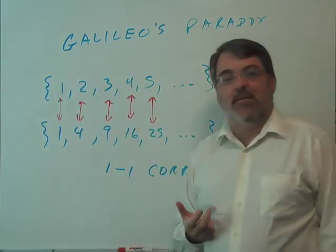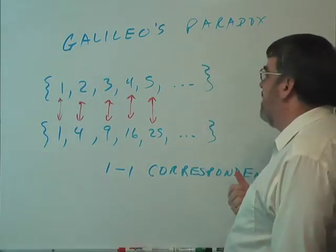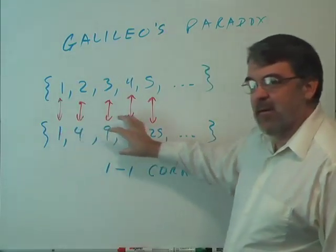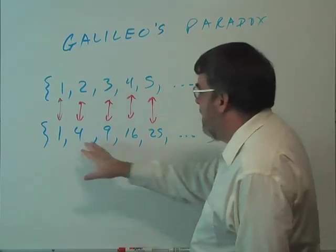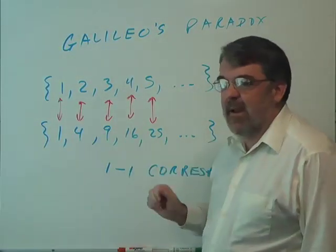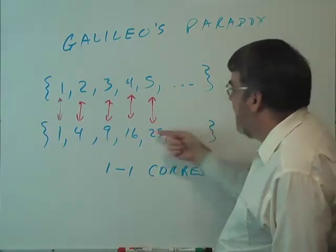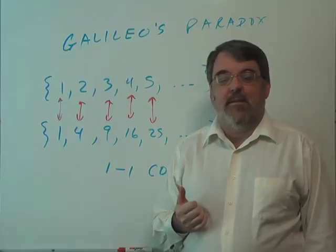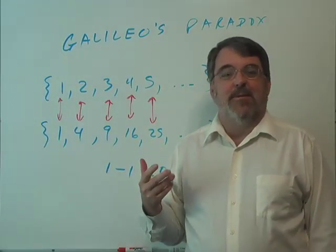It tells us that there are as many numbers in this set of perfect squares as there are counting numbers. Now, doesn't that strike you as strange? Because you would think there'd be a lot fewer of these numbers. For example, this set does not contain two or three or five, six, seven, eight. But the size of this set matches the size of that set. Very, very troubling.